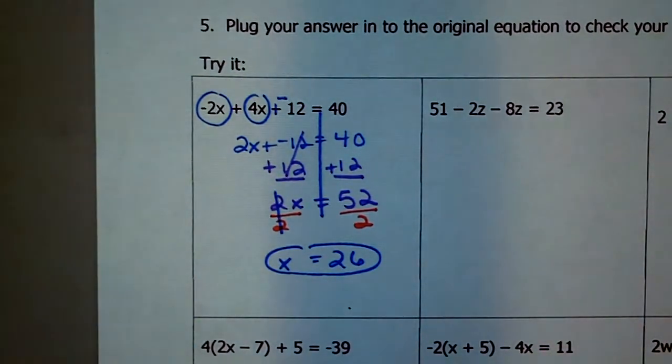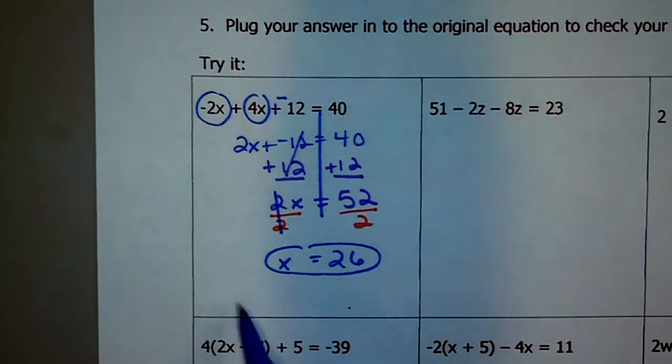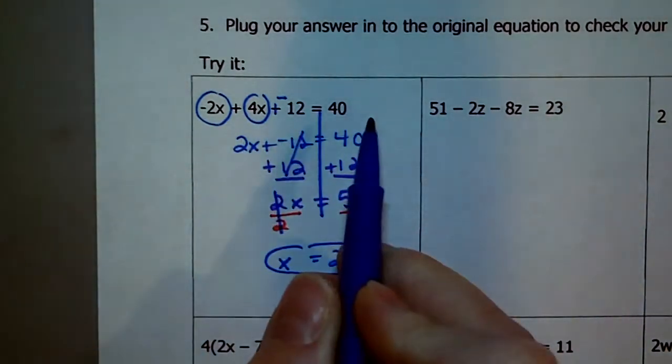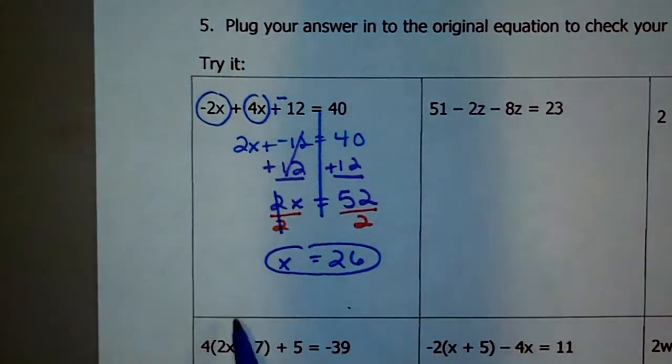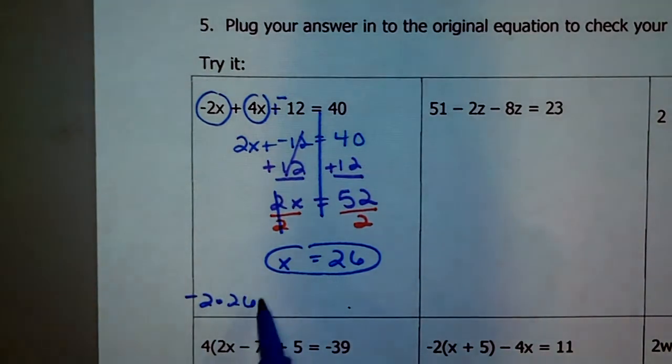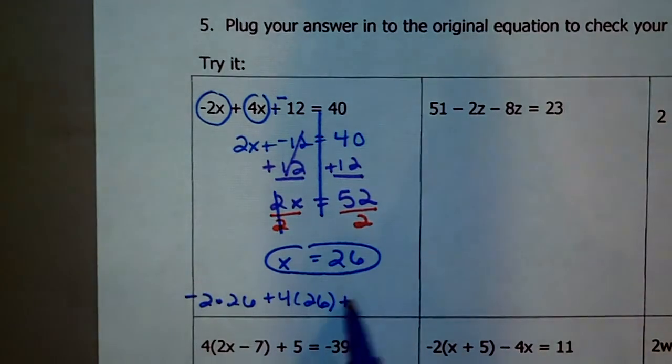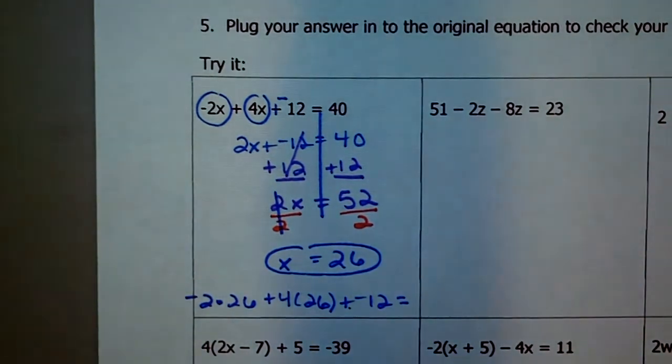Now, I don't think I'm going to plug in every single one but I want to make sure you know how to check these. You can just simply type this into your calculator to check it. So, if -2x + 4x + -12 is supposed to equal 40, that means when x is 26 this should work. So, to check it you would take -2 times that 26 that you got plus 4 times 26 plus -12. When I typed all that in, I got 40 and that's exactly what I was supposed to get. So, I know that I'm right. You can check every single one of them. So, you just plug it back in wherever you see an x. With these multi-step equations, you're probably going to see the variable more than one time. So, wherever you see it, plug it in.